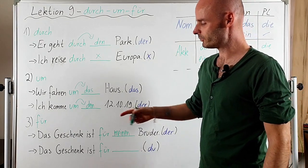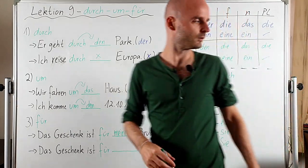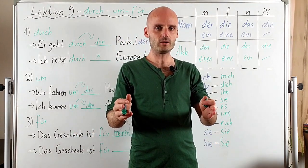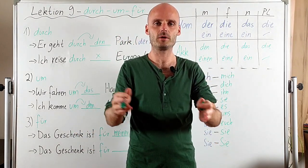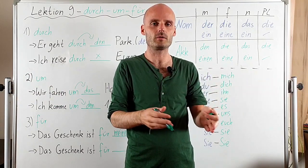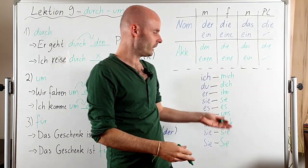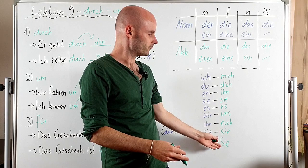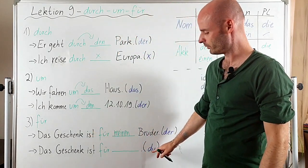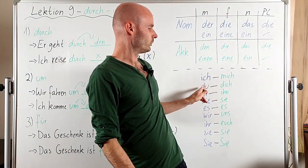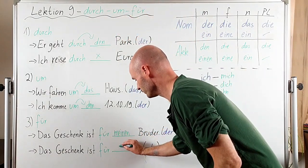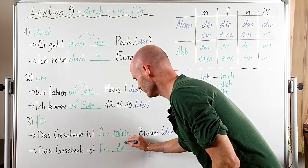'Das Geschenk ist für...' — and here we can use one of the personal pronouns. 'Das Geschenk ist für dich, für sie, für ihn, für euch.' We have to use the personal pronoun in accusative. For example, 'du' in accusative is 'dich' — so 'Das Geschenk ist für dich' means 'The gift is for you.'